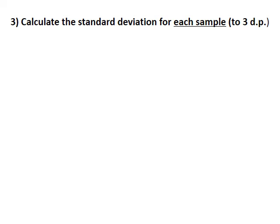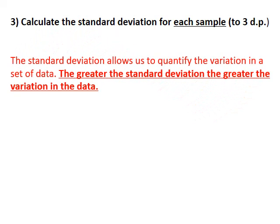Once we've calculated the mean for each dataset, we calculate the standard deviation. The standard deviation measures how the values in a dataset are spread out from the mean. A high standard deviation indicates a lot of variation from the mean, while a low standard deviation means all values are nearer to the mean.